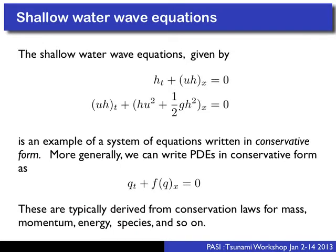The shallow water wave equations, which most of you are familiar with, in 1D form a coupled system of two equations. The first equation is for average height field, and the second equation is for momentum. This is the nonlinear version — it's an example of a system of equations written in conservative form.